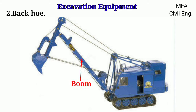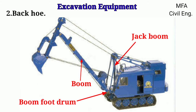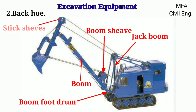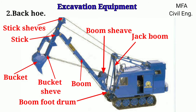The backhoe also removes earth as it caves into the ground to establish a natural slope. The basic parts of the backhoe include the boom jack, boom, boom foot, drum, boom sleeves, stick sleeves, stick, bucket, and bucket sleeves.